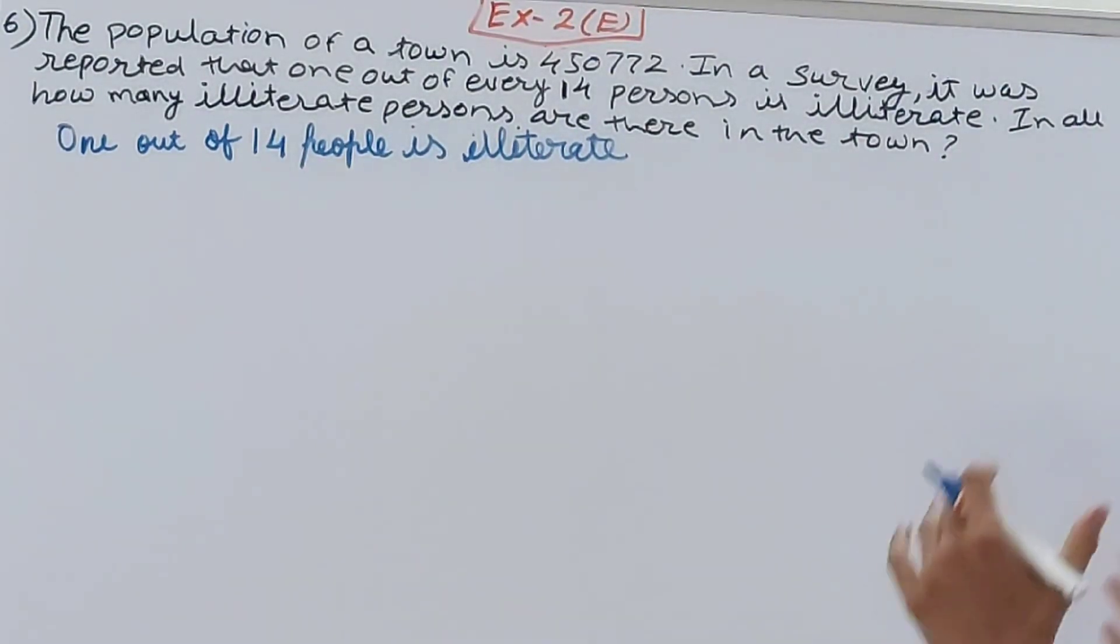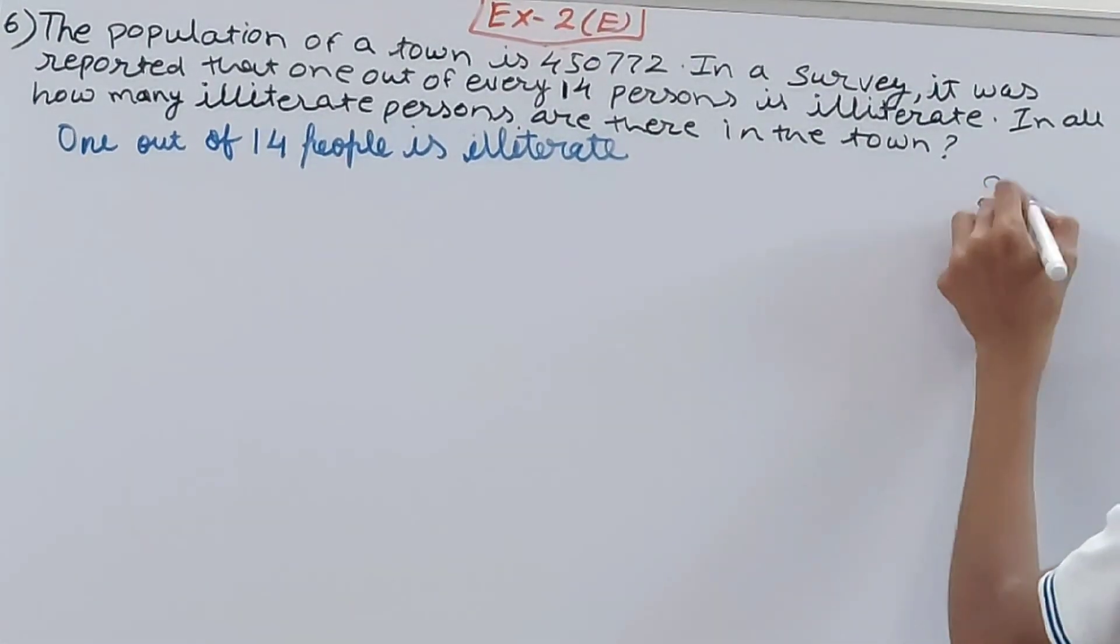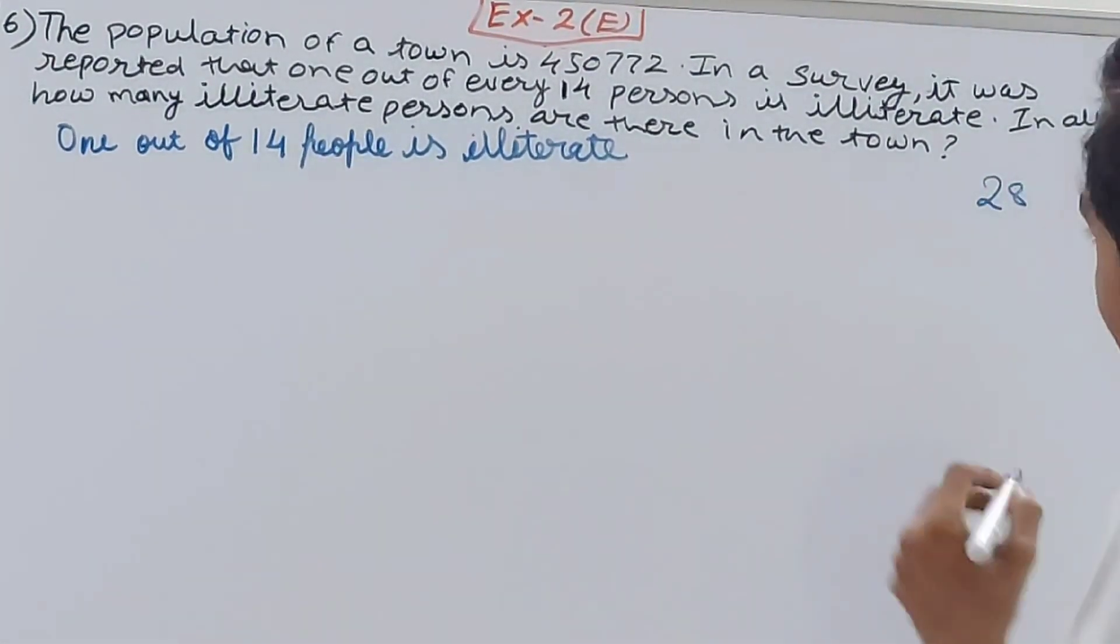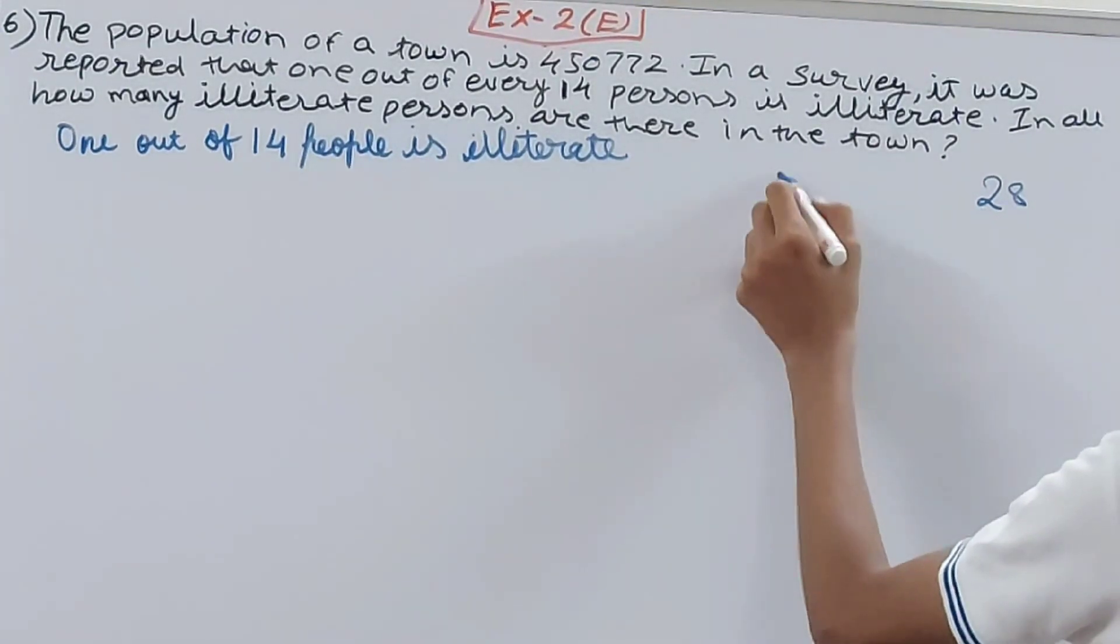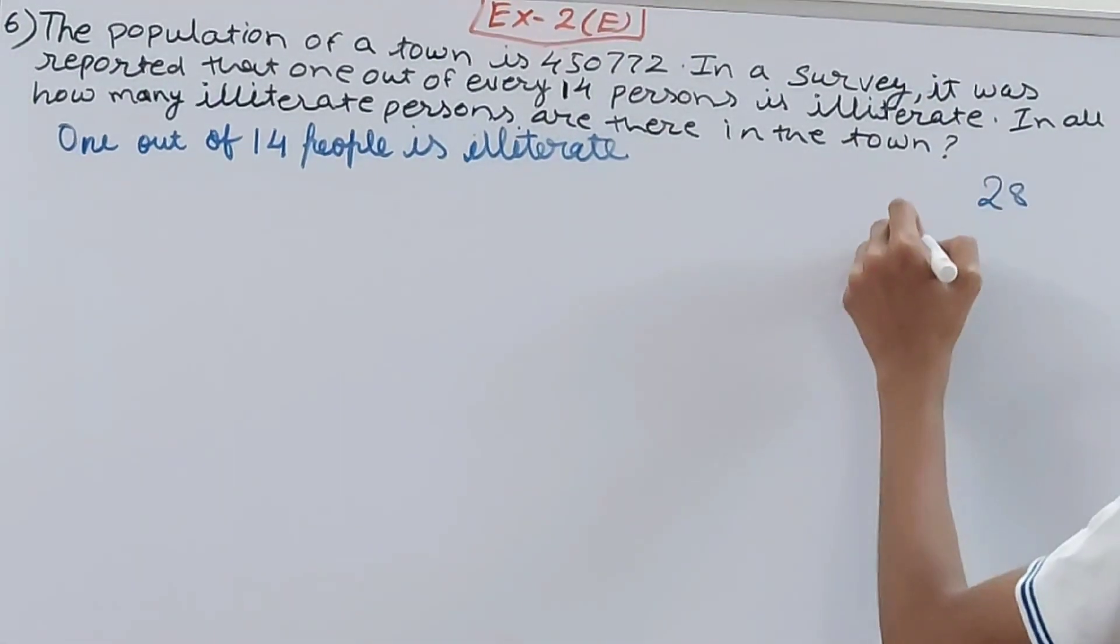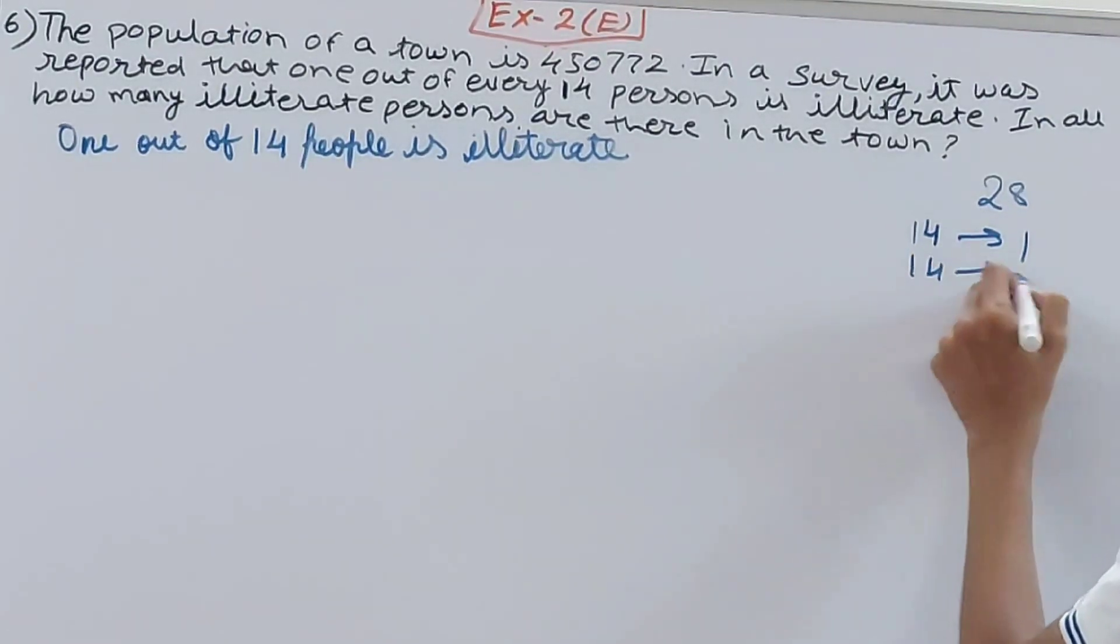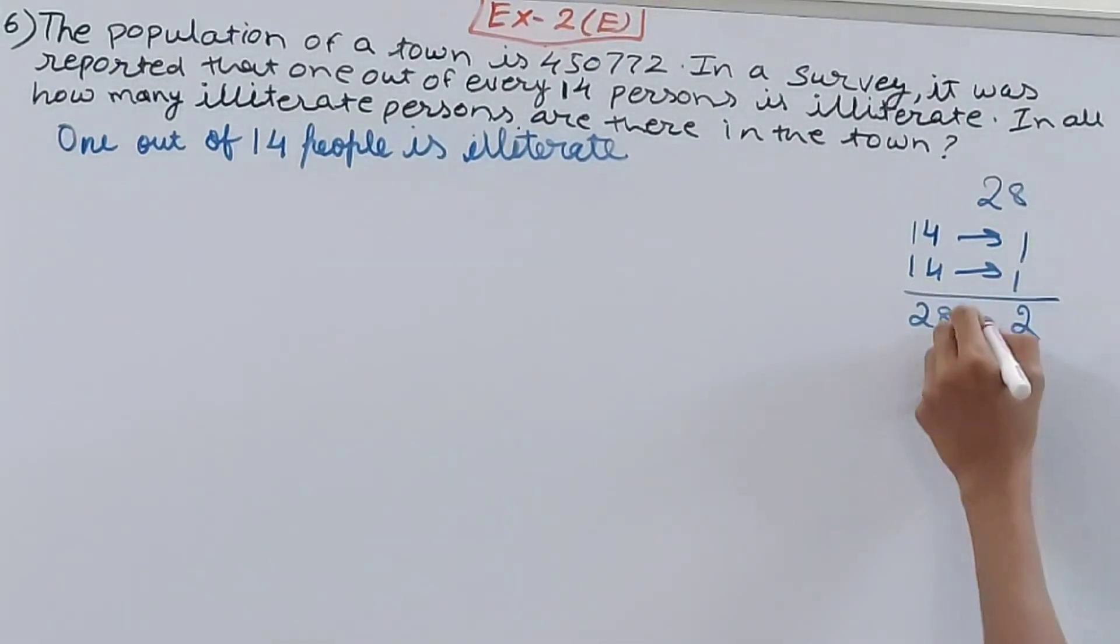Now try to understand this with a smaller example. Suppose I say in a village there are 28 people, and again same condition: one out of 14 is illiterate. So how many people are illiterate? See, you will do what? First fourteen, one person is illiterate. Next fourteen, another person is illiterate. So how many illiterate people? Two. How many total people? 28.